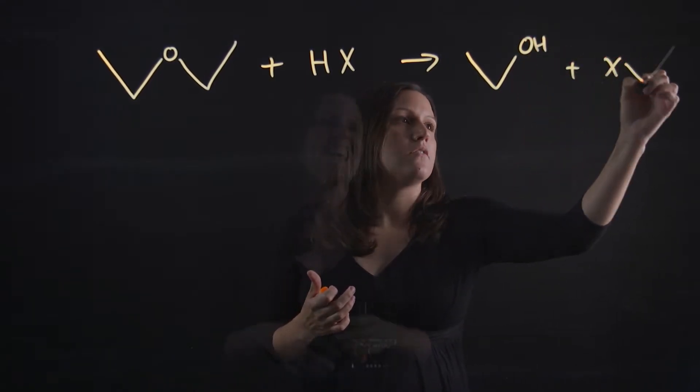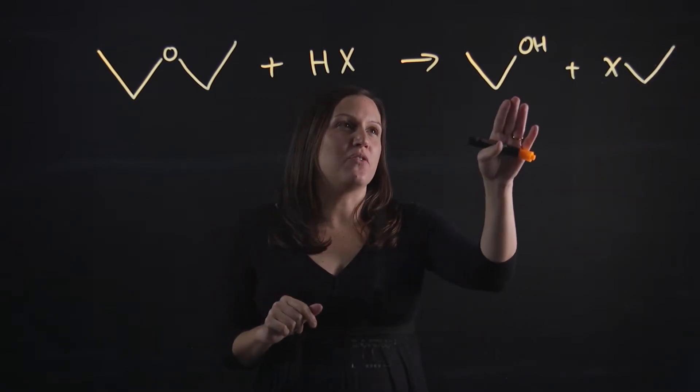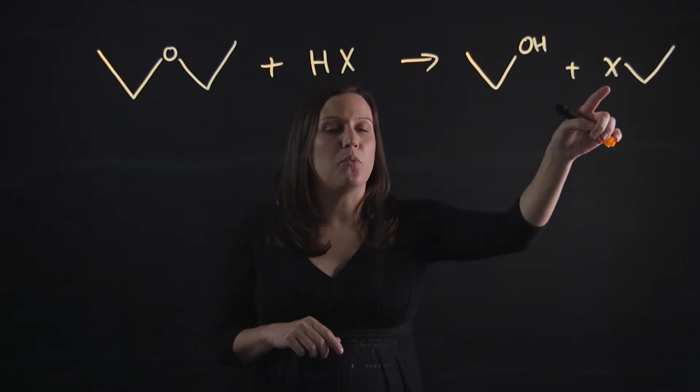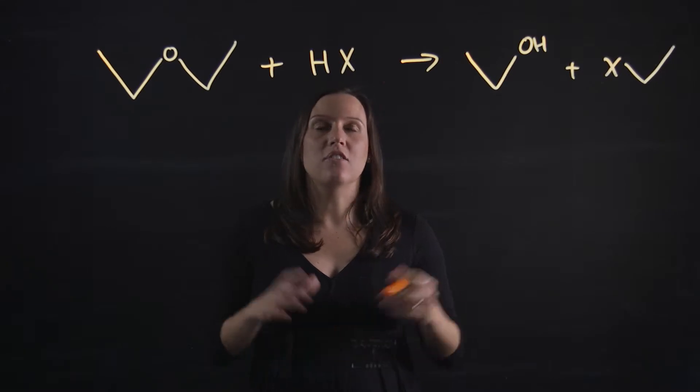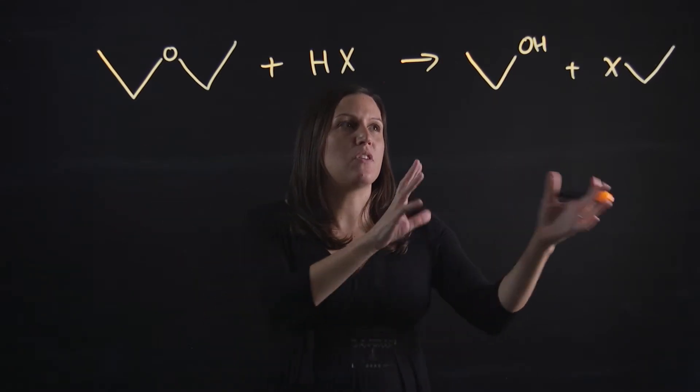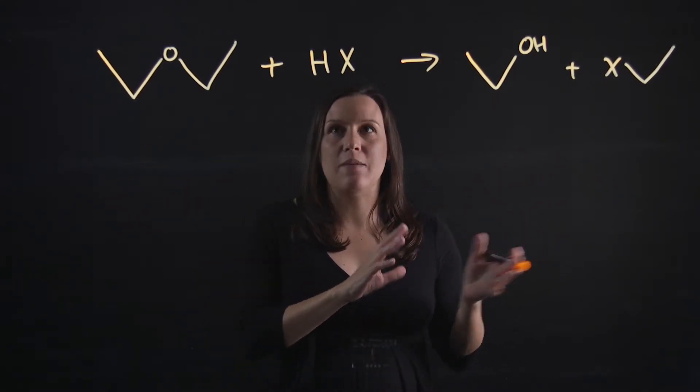going to be symmetrical. So when you do the cleavage, one side will get the alcohol and one will get the halogen. For symmetrical ethers, it doesn't matter which side you draw it on because it's the same thing.